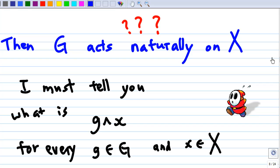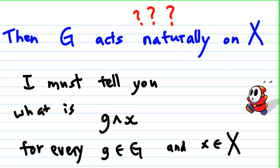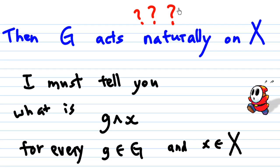Then G acts naturally on X. How naturally is this? I must tell you what is g cap x now for every element in G and every element in X.